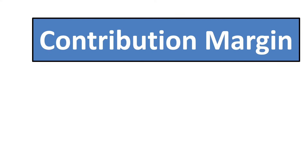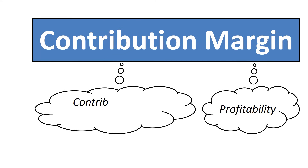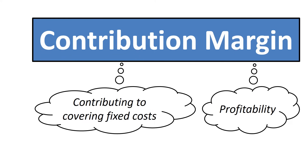The word margin indicates that it is a term describing profitability. The word contribution in this context means contributing to covering fixed costs. Once contribution margin has fully covered fixed costs, a company can turn profitable.